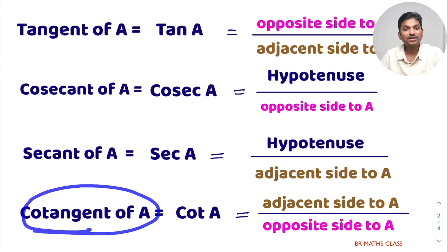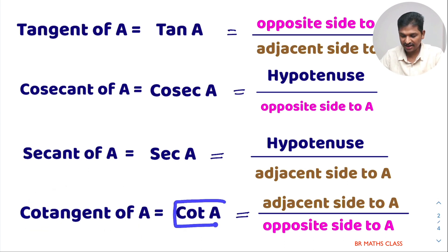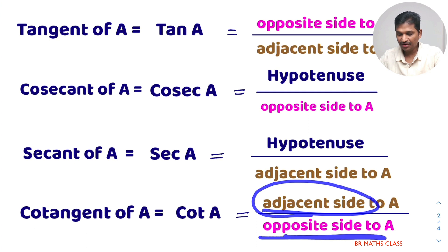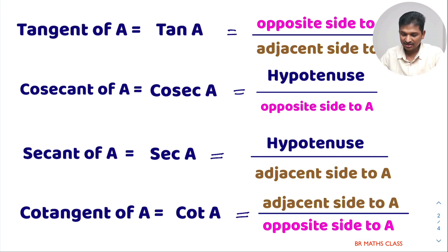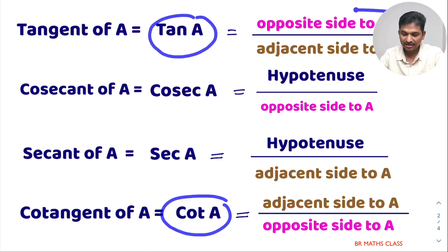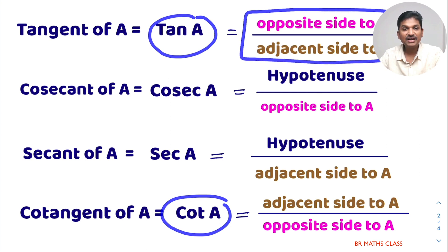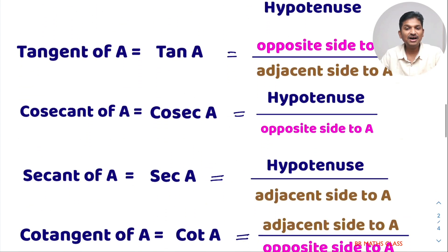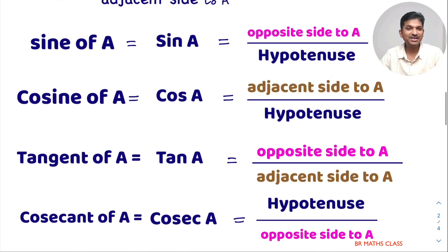Cotangent of A, simply called cot A — taking the first three letters. Cot A is defined as adjacent side to A divided by opposite side. Observe tan A and cot A — they are reciprocals of each other. Tan A is opposite side by adjacent side, and cot A is adjacent side by opposite side. These are the six trigonometric ratios.